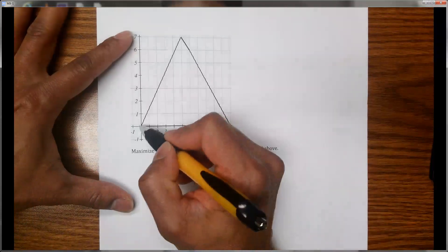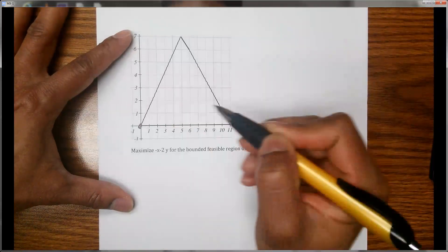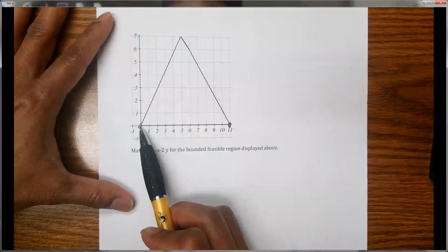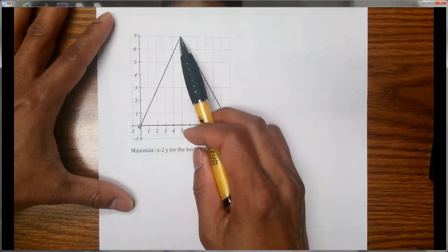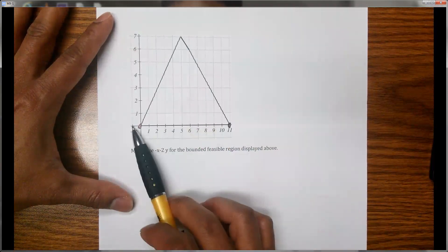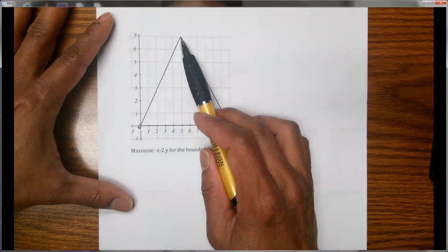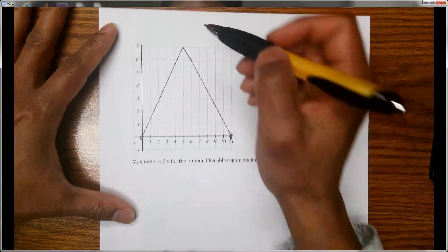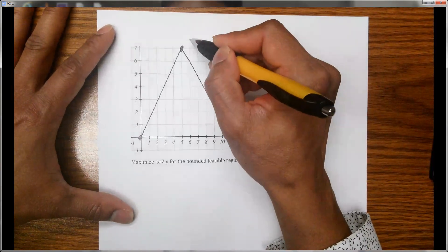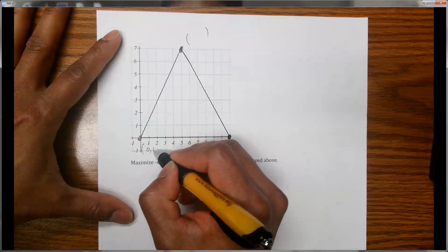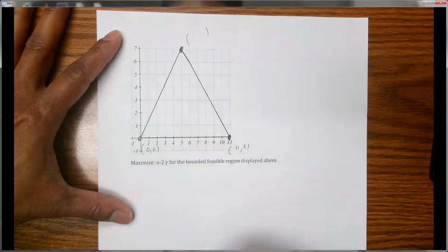Corner points can be found by looking at the point of intersection between these lines with the x-axis, y-axis, or with each other. You can see this is a point of intersection, this is a point of intersection, and this is also a point of intersection between those two lines. The coordinates are (0,0), (11,0), and (5,7).